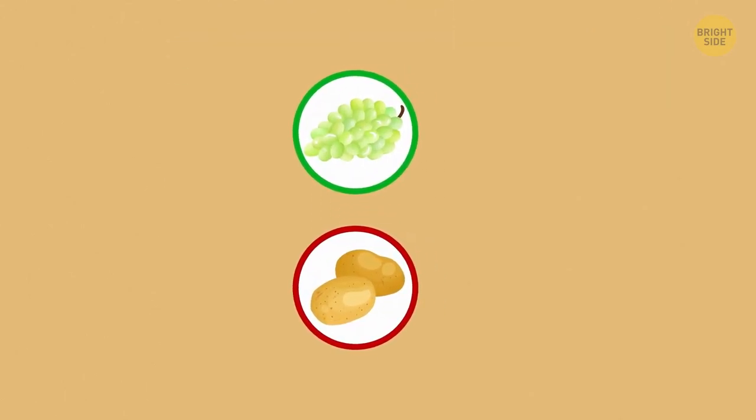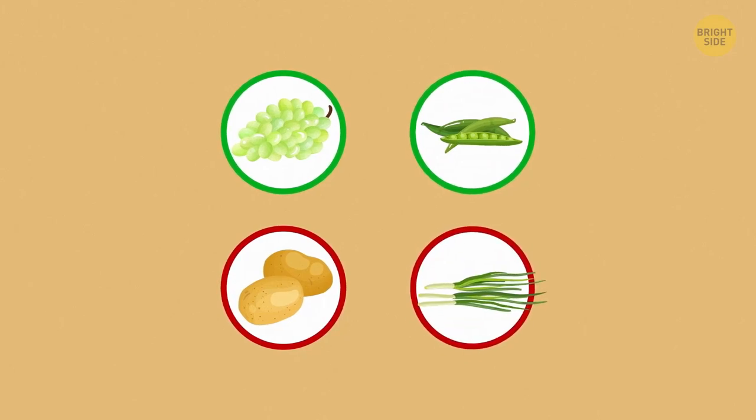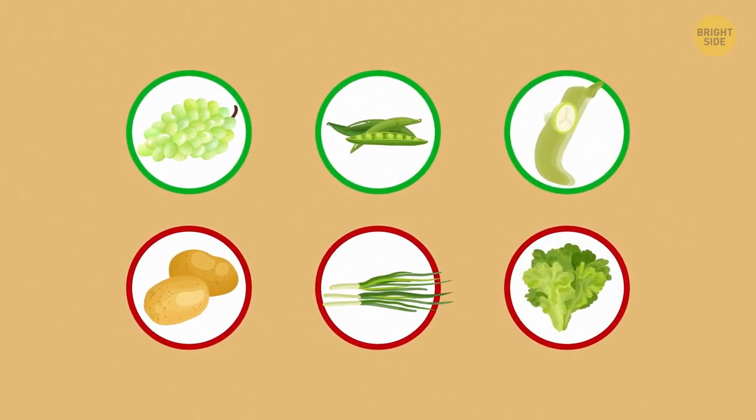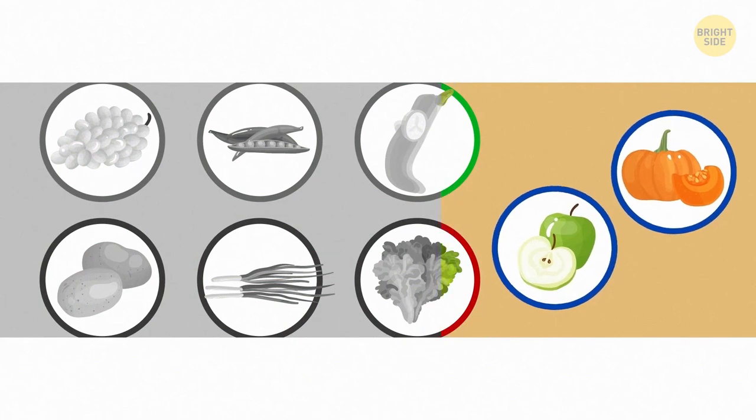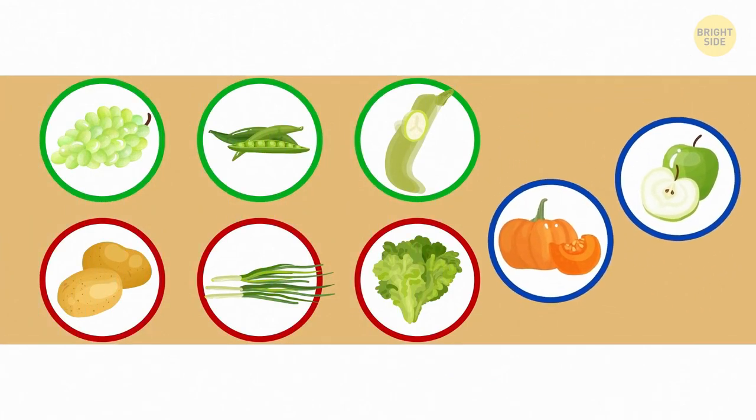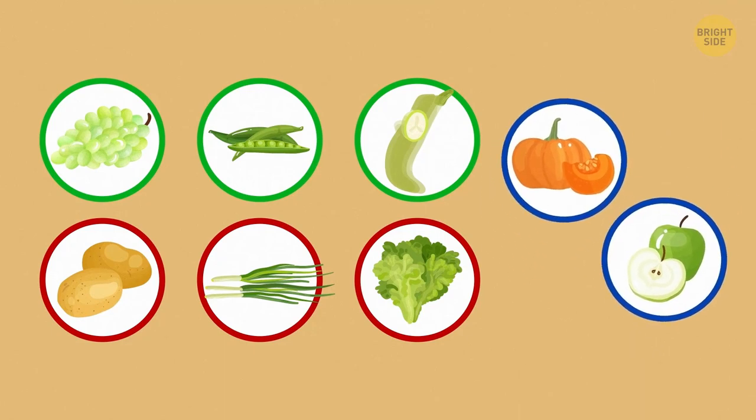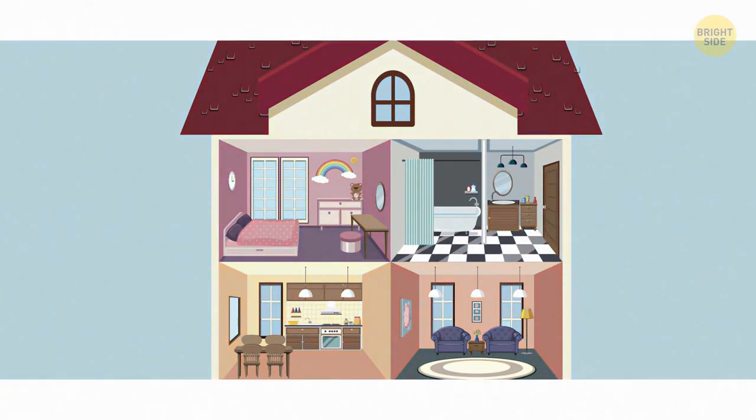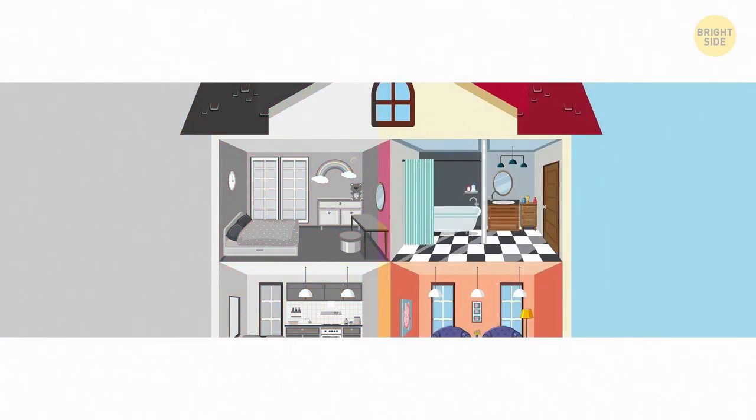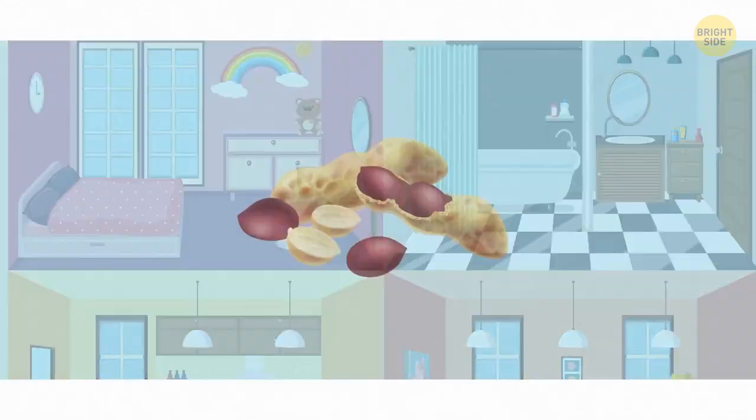42. Adam likes grapes, but not potatoes. He likes peas, but not onions. And eats squash, but not lettuce. Can you figure out the pattern and say whether Adam will eat apples or a pumpkin? Adam likes everything that grows on vines. He'll pick a pumpkin. 43. It's a house with two, often one, rarely three occupants. You break the walls, eat the occupants, and throw the house away. What is it? It's peanuts.